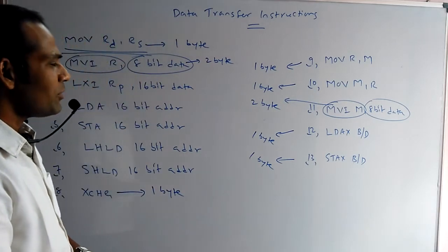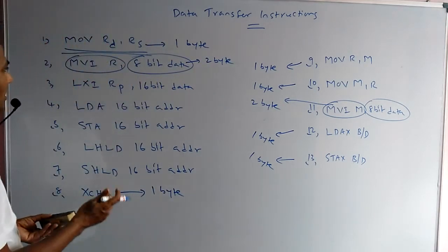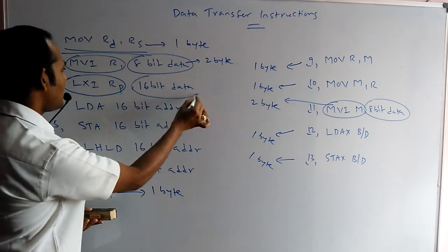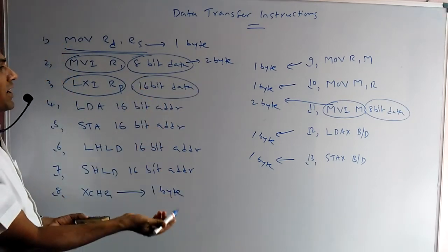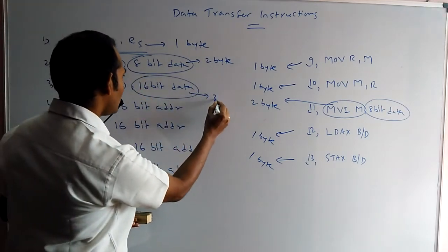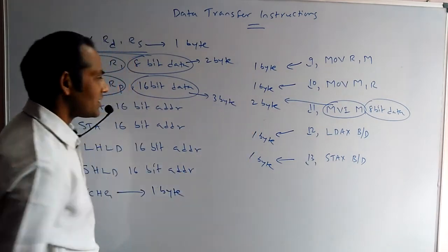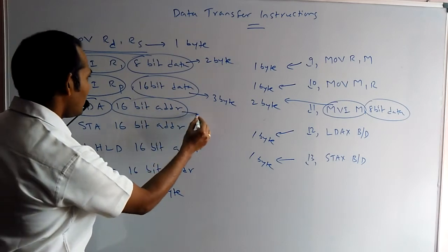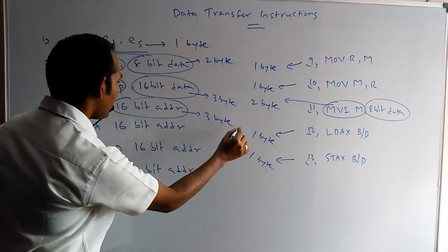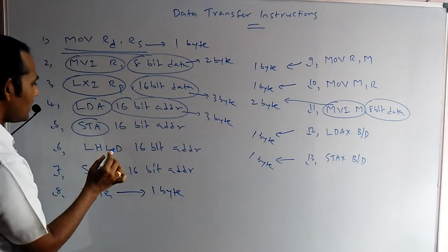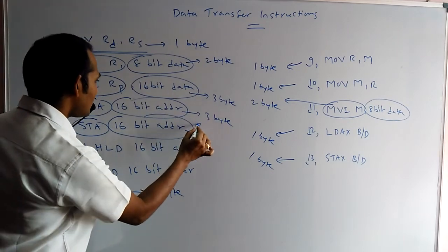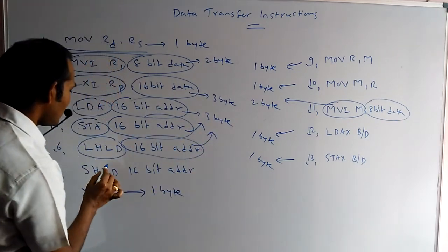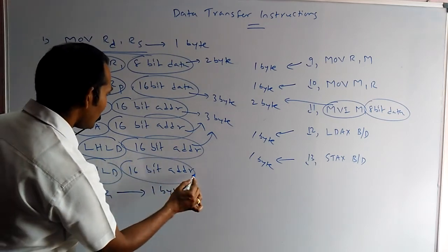If the instruction contains letters followed by 16-bit data or a 16-bit address, it becomes a 3-byte instruction: 1 byte for the opcode and 2 bytes for the 16-bit operand, giving 3 bytes total. Several instructions in this group are 3-byte instructions.